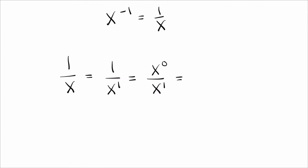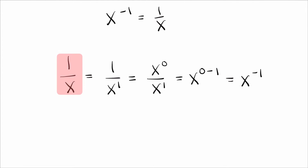Now when you have variables with powers and you're dividing them, you can take the power on top and subtract the power on the bottom. Zero minus one is negative one, and I've just shown that one over x equals x to the negative one power.